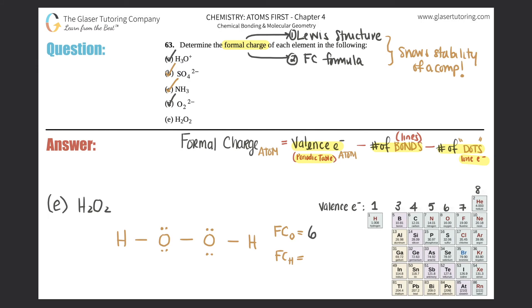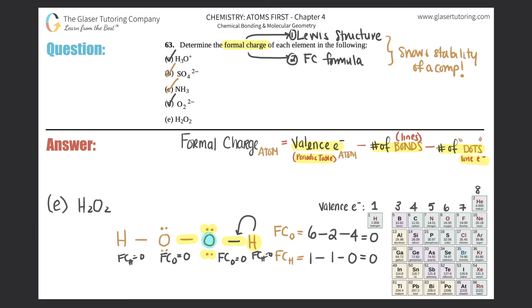Formal charge for oxygen: valence electrons = 6. This oxygen has two bonds, so minus 2. Lone electrons: 1, 2, 3, 4 dots, so minus 4. That's 6 − 2 − 4 = 0. Both oxygens have a formal charge of zero. For hydrogen: valence electrons = 1, minus one bond, minus zero dots = 0. Both hydrogens also have a formal charge of zero. The entire compound is stable — that's why there's no charge in the upper right corner.